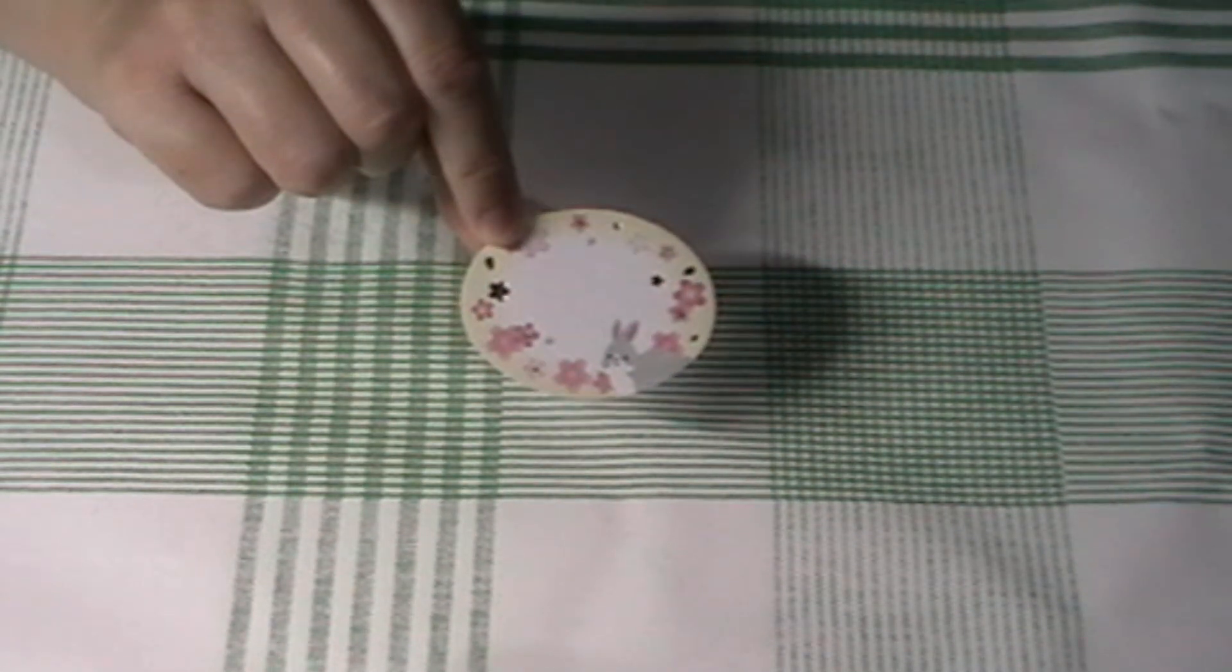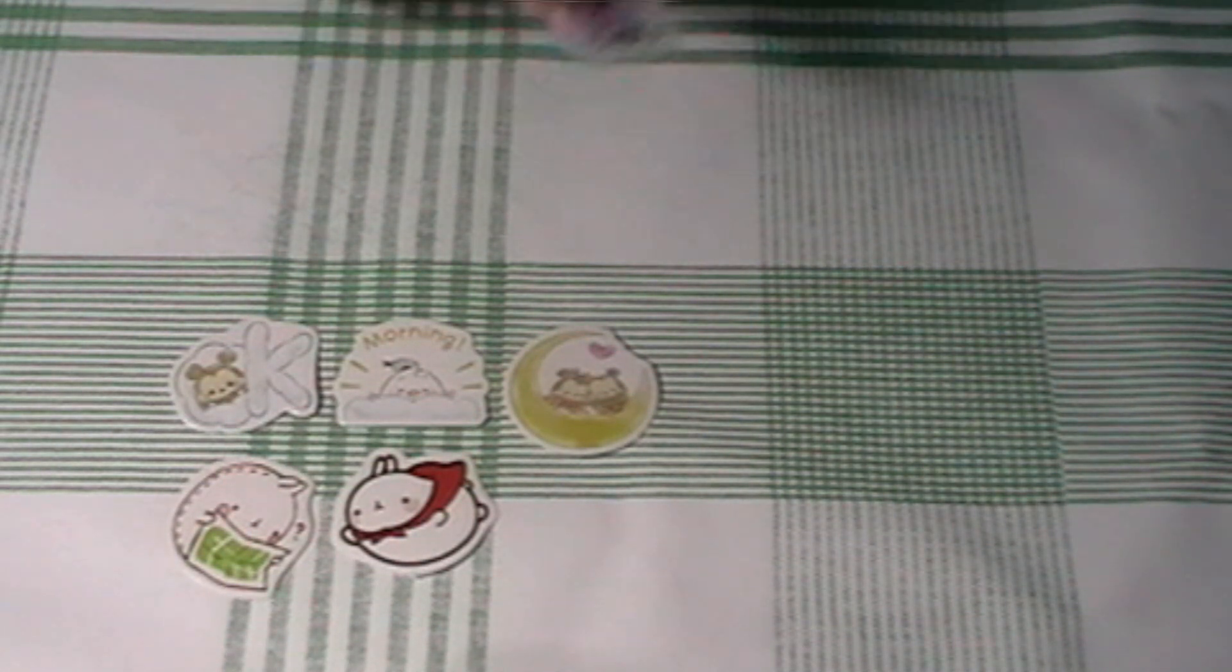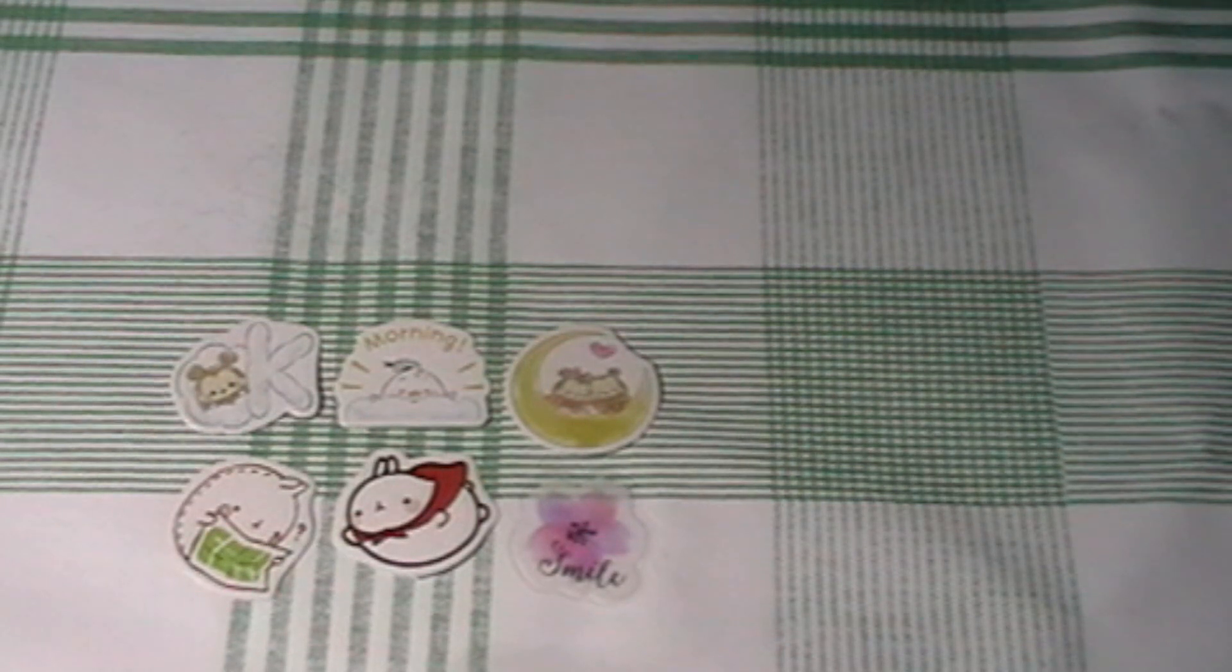I'm also including a sakura bunny sticker. Some little sky stickers that I feel match the colors of the letter. And then I have some sticker flakes. We have some mona, some ufufi. I'm including some sakura bits. I think they're really cute.